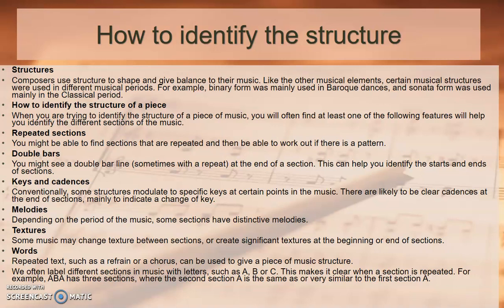Textures include monophonic, polyphonic, homophonic, and heterophonic, or composers create significant textures at the beginning or end of sections. Words: if you have words, repeated texts such as a refrain or chorus can be used to give a piece of music structure. We often label different sections in the music with letters such as A, B, or C.